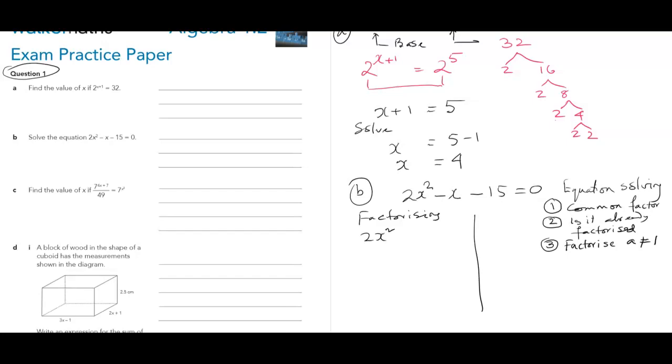2x squared minus x minus 15. Alright. I'll follow the cross method. 2x and x. 2x times x should give you 2x squared. That's the one. Negative 15. I want to split it to maybe. Okay. So negative 15 pairs of factors. 3 times 5. 15 times 1. And that should be all.